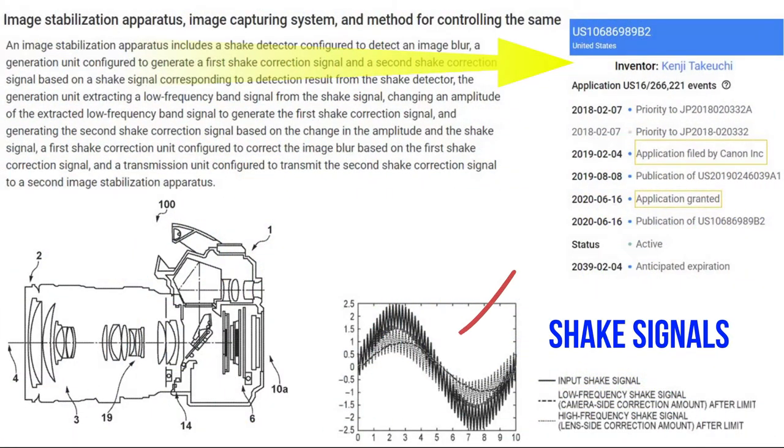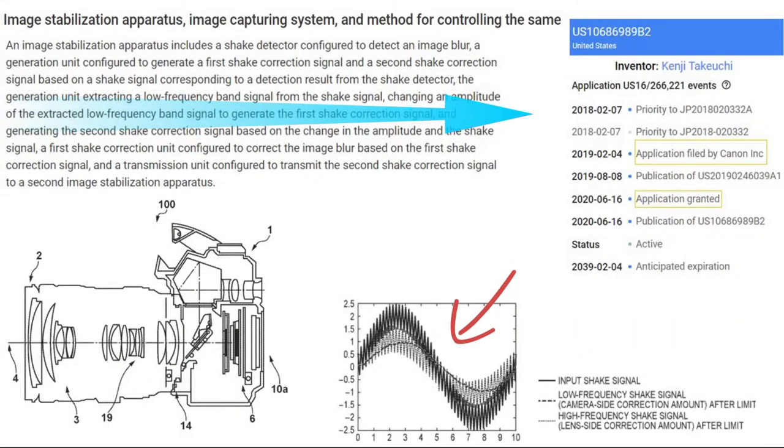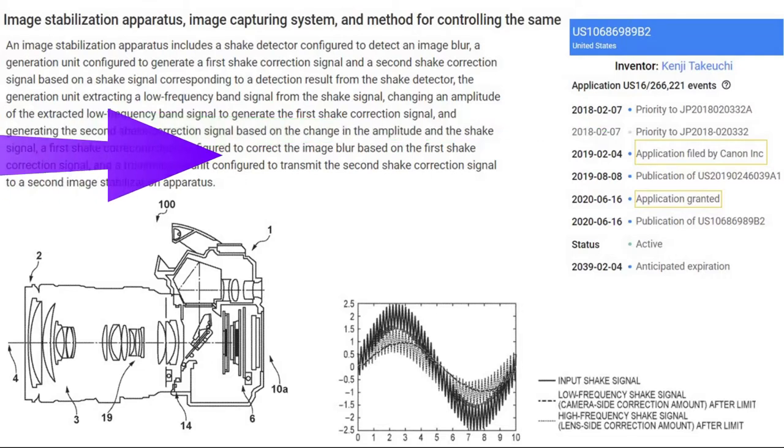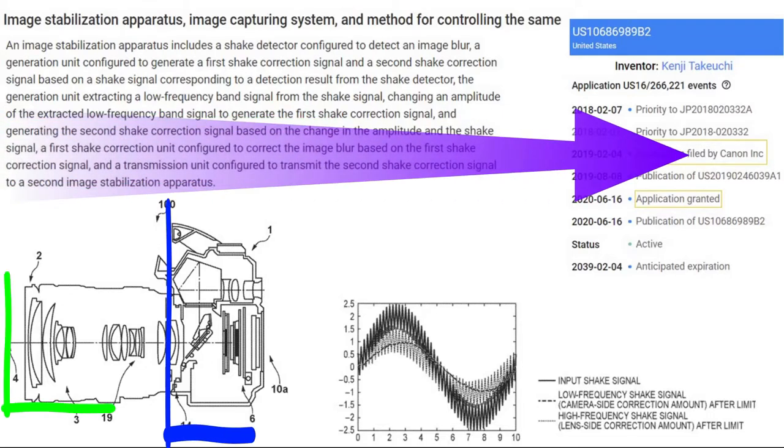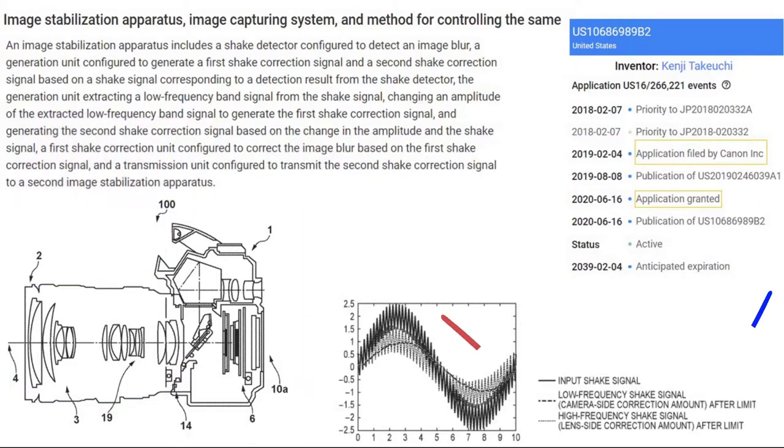Signal generator unit extracts low frequency band signal, changes the amplitude of extracted low frequency signal to generate the correction signal. These independently generated correction signals are utilized at camera and lens side units for cancelling out the shake or blur effect.